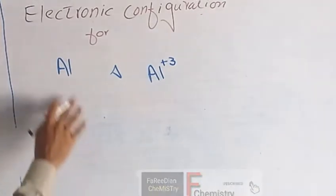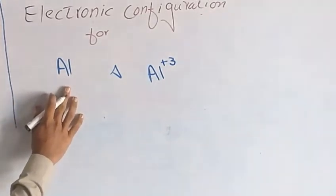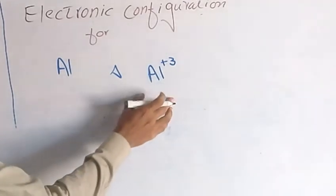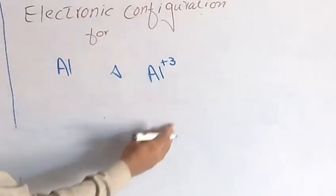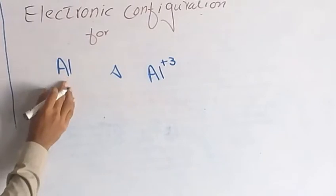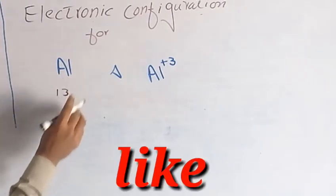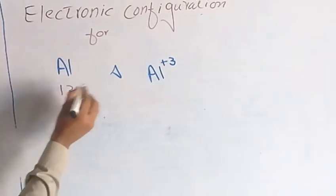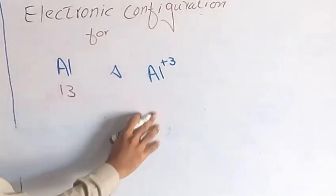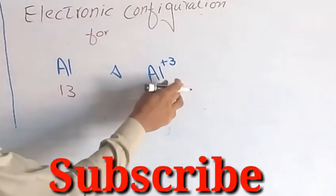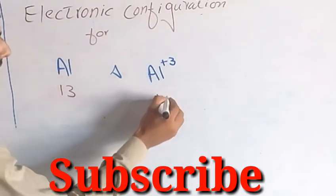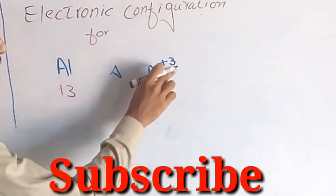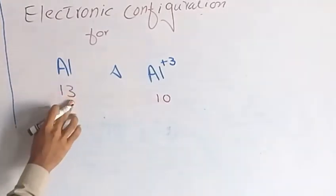First of all we know the atomic number of aluminium and the atomic number of aluminium plus 3. So atomic number of aluminium is 13, and atomic number of aluminium plus 3 is 10. It means loss of three electrons from this 13.